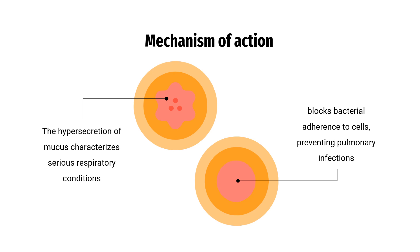Mechanism of action: the hypersecretion of mucus characterizes serious respiratory conditions including asthma, cystic fibrosis (CF), and chronic obstructive pulmonary disease (COPD). It blocks bacterial adherence to cells, preventing pulmonary infections. Glycoproteins — Fucomucins, Sialomucins, and Sulfomucins — regulate the viscoelastic properties of bronchial mucus. Increased Fucomucins can be found in the mucus of patients with COPD. Carbocysteine serves to restore equilibrium between Sialomucins and Fucomucins, likely by intracellular stimulation of the Sialotransferase enzyme, thus reducing mucus viscosity.